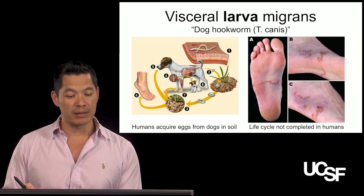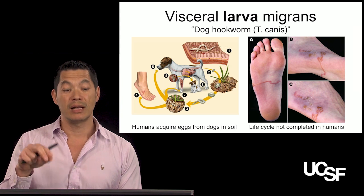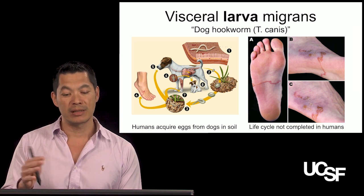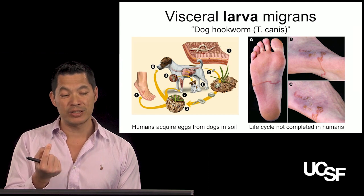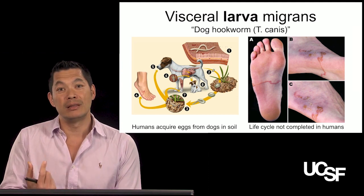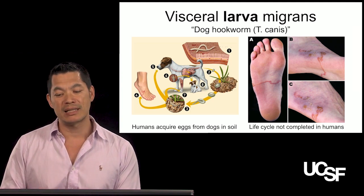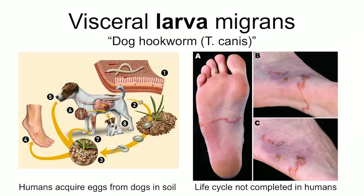What happens is you walk around, the adult dog hookworms have laid eggs that infect the soil. You walk through contaminated soil or feces, and the dog hookworm gets into you. It's trying to find dog lungs, but there are no dog lungs in you, so it moves around the body trying to find them. Ultimately it fails and, because it can't complete its life cycle, it dies. But as it moves around, it can cause an intense reaction that can be quite itchy and inflammatory.